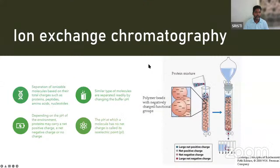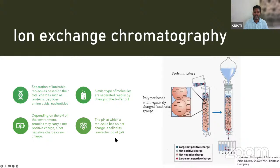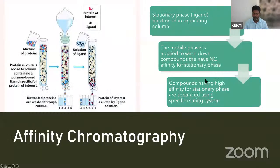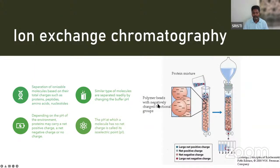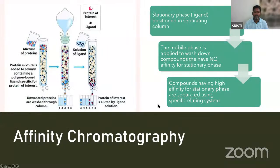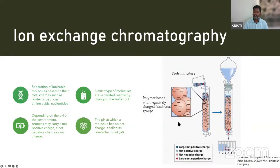Next is ion exchange chromatography — separation of ionizable molecules based on total charge, such as proteins, peptides, amino acids, and nucleotides. Similar molecules are separated by changing the buffer pH. Depending on the pH of the environment, proteins may carry a net positive charge, a net negative charge, or no charge. The pH at which the molecule has no net charge is called isoelectric pH. The polymer matrix has charges (positive or negative), and when the net charge of the molecule differs from the solvent, it is eluted accordingly.